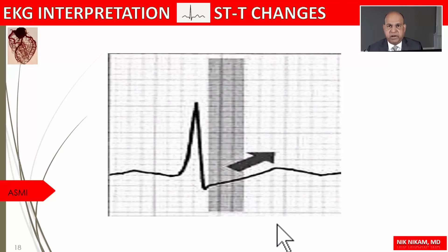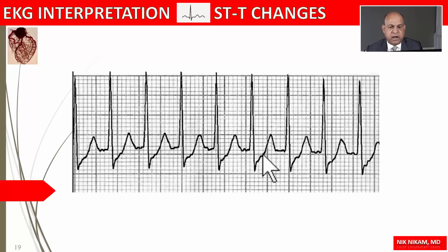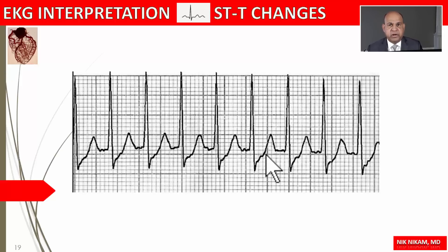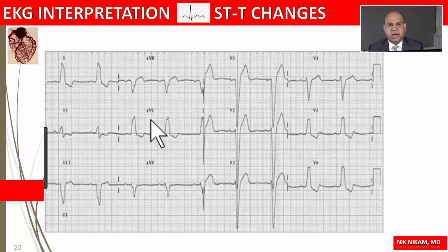Here is an example of up-sloping ST depression with a J-point depression. At one square we have one box and at two squares we have 80 milliseconds, and at the end of 80 milliseconds the ST segment is one millimeter below the baseline — this is borderline, even though we see ST depression equal to three millimeters at the J-point. If you come across up-sloping ST depression during a treadmill test, always look at the ST segment location 80 milliseconds from the J-point to determine whether this represents ischemic changes.